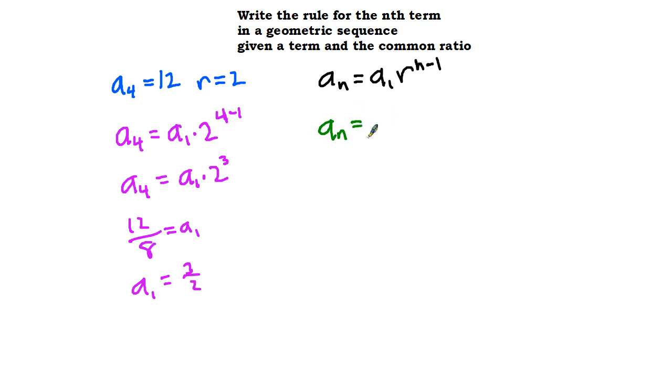And then our first term is going to be 3 halves, and then we'll multiply that times whatever r is, in this case 2, and we'll raise that to the power of n minus 1. In our rule we'll always have a sub n and n minus 1.